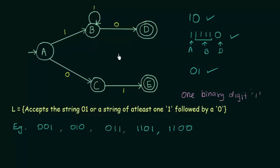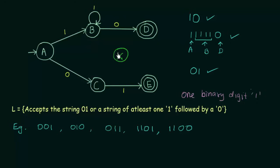Actually, this DFA is not wrong. What we need to do is complete it by mentioning something known as a dead state. These strings are anyway not going to be accepted — the only strings accepted are those described in L. These strings do not follow that rule, so they will not be accepted. When we reach a state in a DFA and don't have a place to go, that means it goes to a state known as a dead state. Let us complete this DFA and I will mention a state which I will call X — X is the dead state.